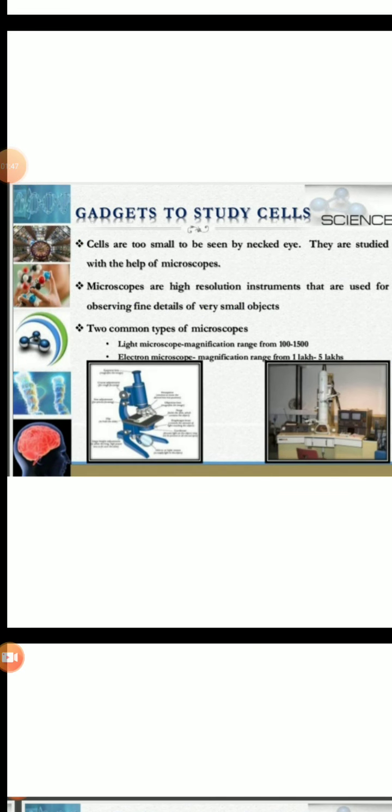Now we know that there is something called cell. But the question arising in our mind is: what are the different gadgets through which we can study these cells? Those gadgets are microscopes. Two common types of microscopes you need to know are light microscope and electron microscope. These are high-resolution instruments used for observing fine details of various minute objects. Cells are also too small to be seen by the naked eye, thus they are seen with the help of microscope.